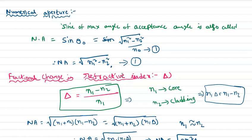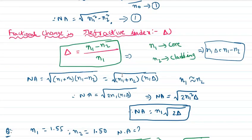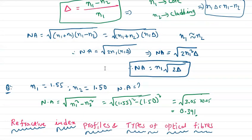The fractional change in refractive index, delta, is defined as the ratio of the difference between the refractive indices of the core and cladding medium to the refractive index of the core. The relation between numerical aperture and delta is: numerical aperture equals n1 times the square root of 2 delta.